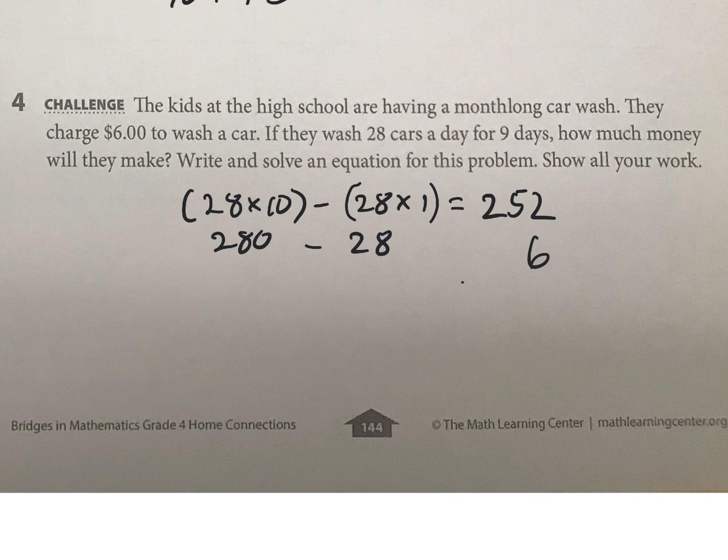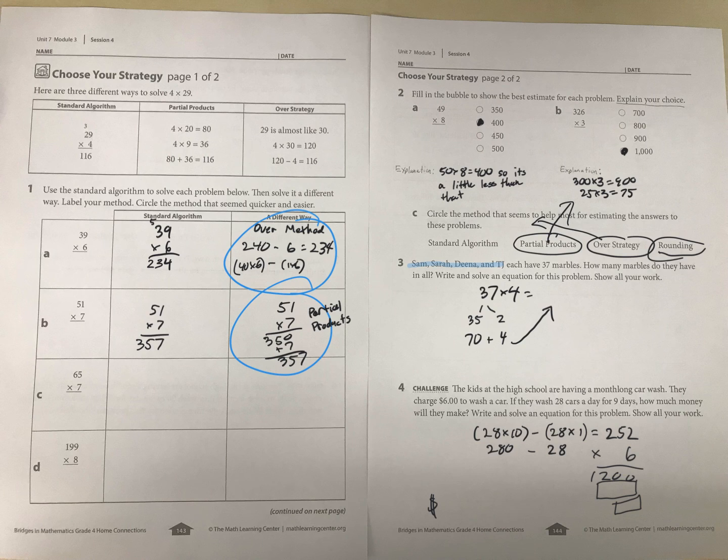And then we now have $6 for each of these 252 cars. So maybe this is a chance here. If you want to do the standard algorithm, you could do it there or however you want to, really. Maybe you could do partial products. So 6 times 200 is $1,200. 6 times 50 would be what? 6 times 2. Or however you want to multiply that is fine. But then your final answer, remember, times dollars is going to be in dollars. So how much did they earn in dollars total for that? So that is your homework. And thank you and goodbye.